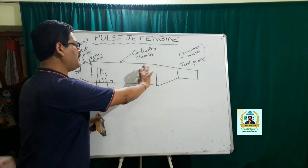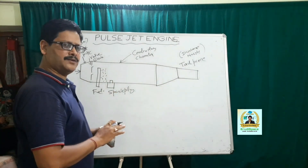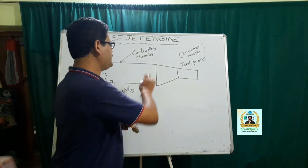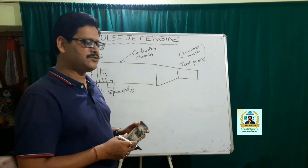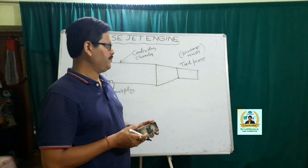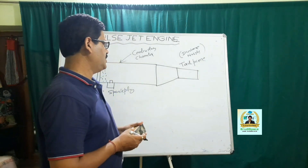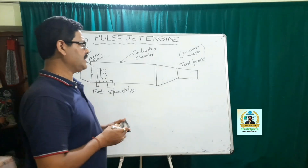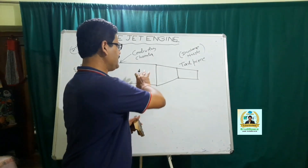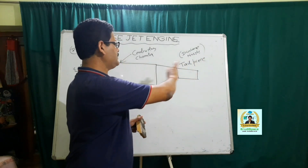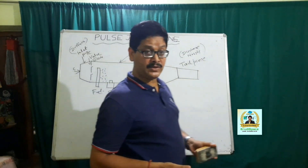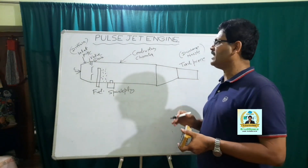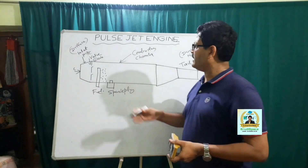As the pressure rises, it closes the clapper valve. The burnt air-fuel mixture, having a huge amount of pressure and temperature, is then made to pass through the discharge nozzle. As we know, the nozzle is a smoothly varying section which converts pressure energy into kinetic energy, so the gas exits the system with very high velocity.